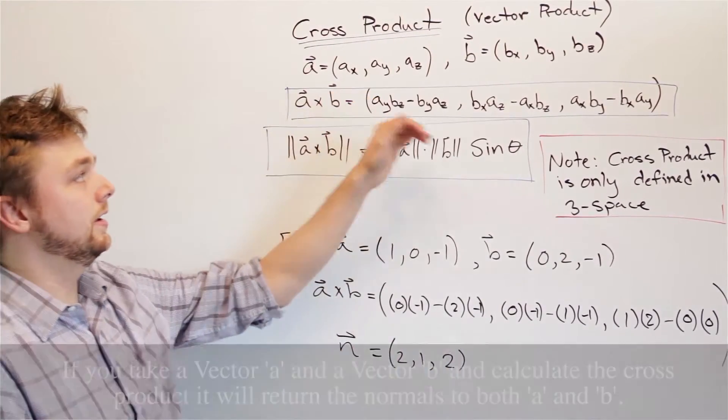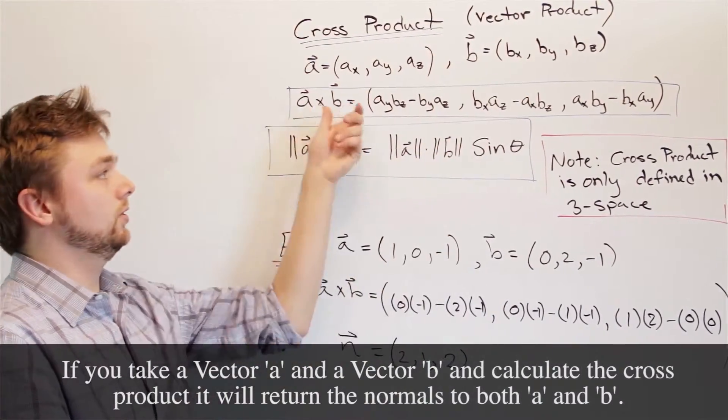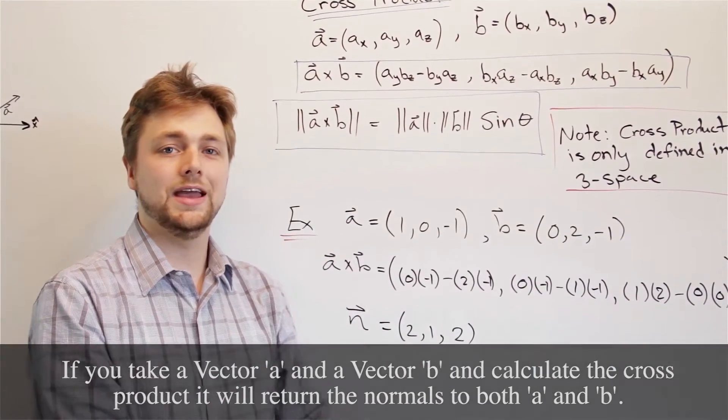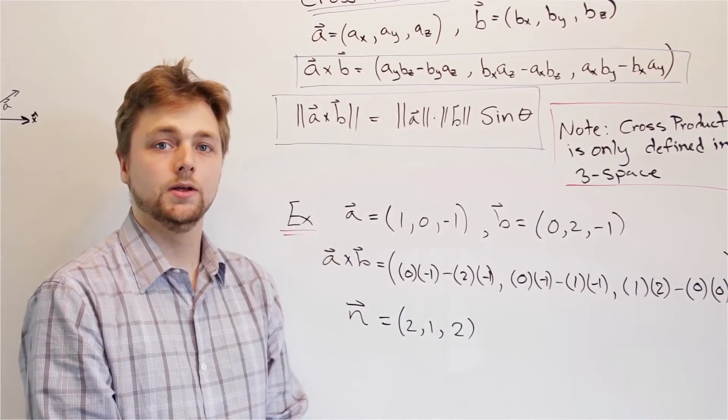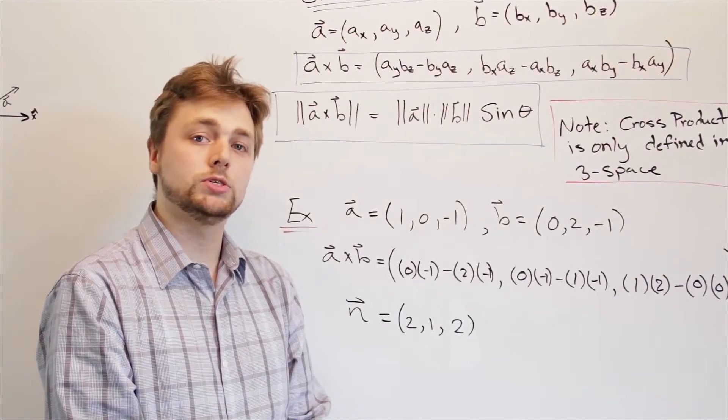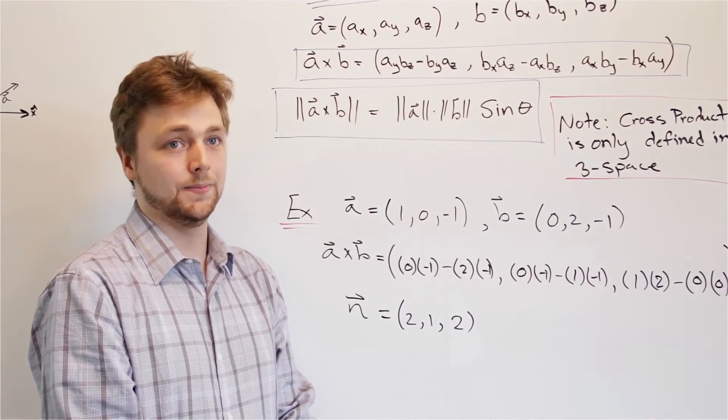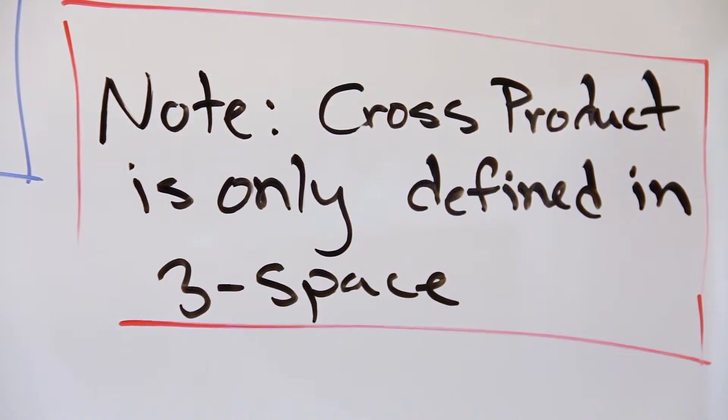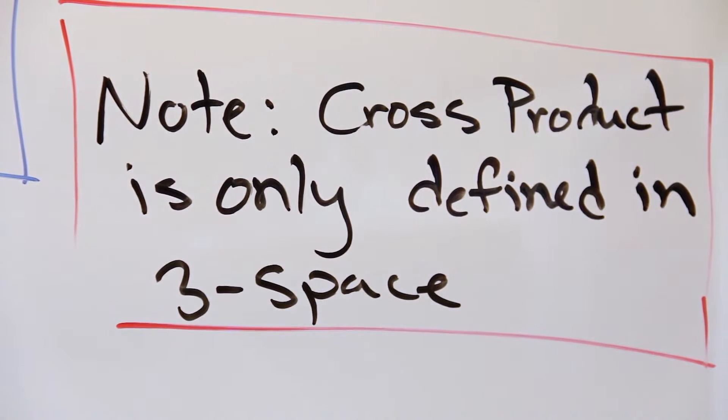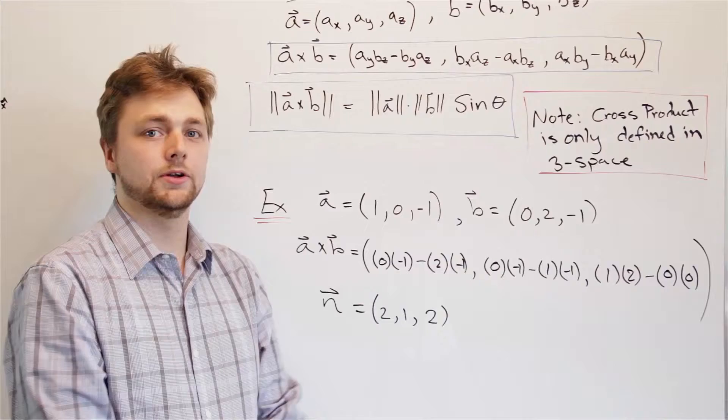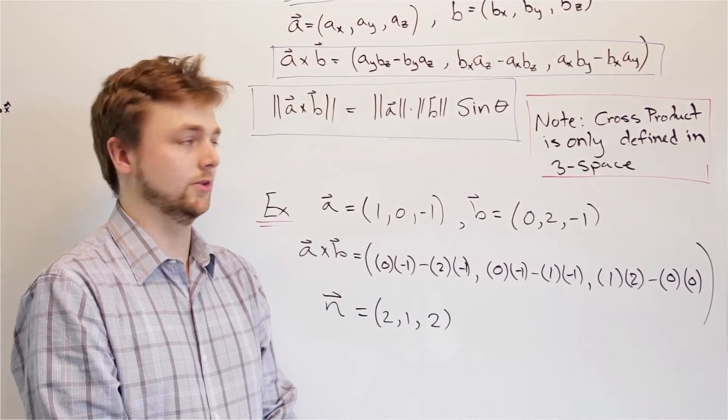If you take a vector a and a vector b and you calculate the cross product, what this returns is the normal to vectors a and b. Well, what does normal mean? Normal means perpendicular. So this third vector that we produce will be perpendicular to both a and b. It's important to note that the cross product isn't defined for dimensions other than three, because we cannot define a unique vector in other dimensions that is perpendicular to the first two.